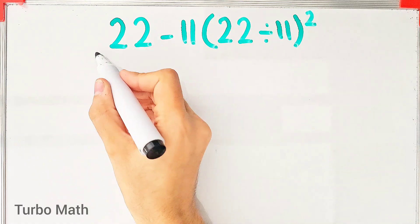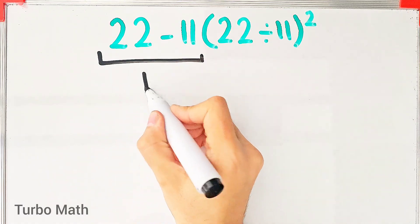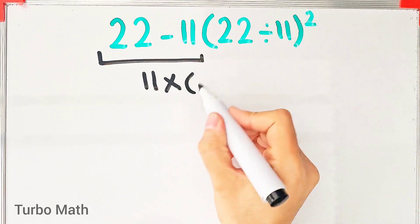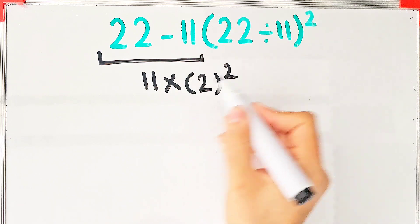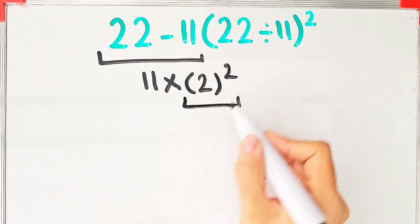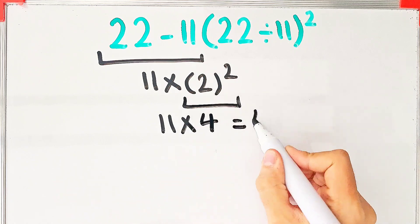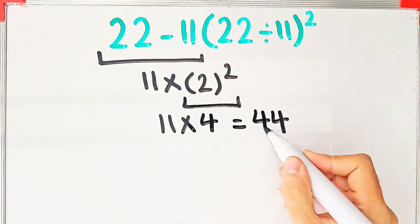22 minus 11 equals 11. 11 times 22 divided by 11 equals 2, then to the power of 2. 2 to the power of 2 equals 4, and 11 times 4 equals 44. But this answer is definitely wrong.